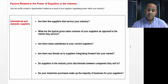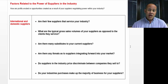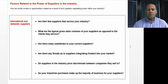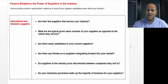You might find that your suppliers are much smaller than you are, or you may find the opposite — that they're much larger. If your suppliers are larger, there may be a threat from them to vertically integrate into your market. Are there many substitutes to your current suppliers? In other words, do you have options? Do you have a plan B?